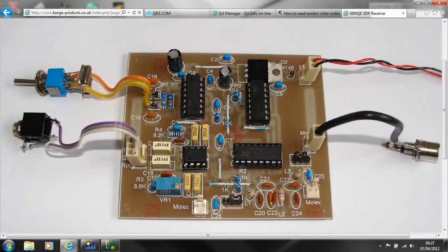This kit costs around £20 and allows you to receive from the SSB segment of the 80m band.